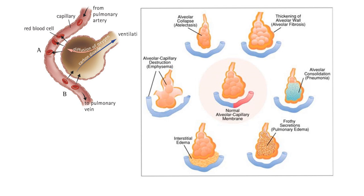Emphysema involves destruction of some of the air sacs, meaning less surface area for gas exchange overall — you get less oxygen picked up. In the human population, people with emphysema often carry an oxygen tank because breathing pure oxygen enhances diffusion to compensate for lost surface area. Then at about the eleven o'clock position, we have alveolar collapse, meaning surfactant isn't present. That decreases the surface area of all those little sacs, which is terrible for gas exchange.